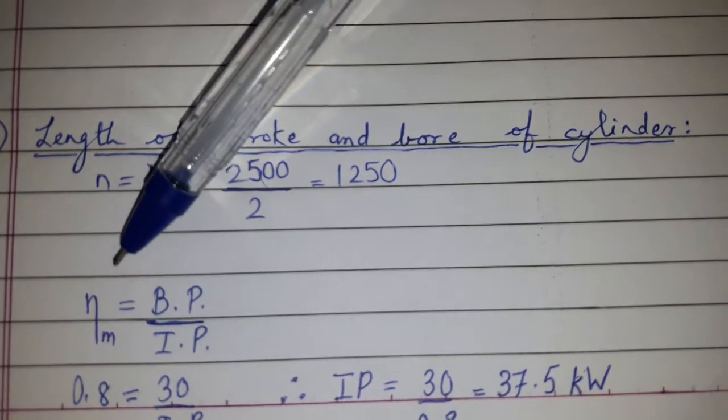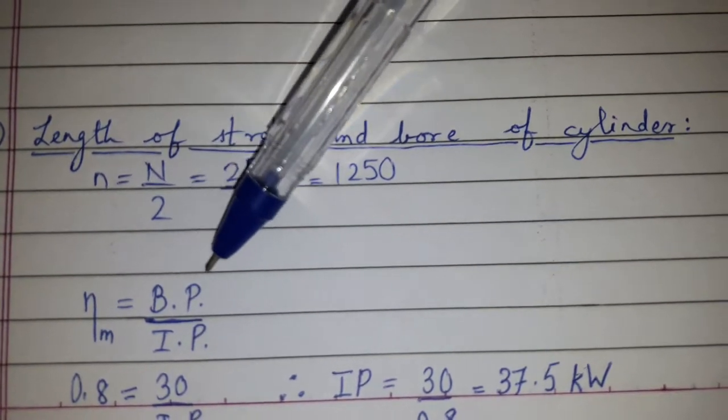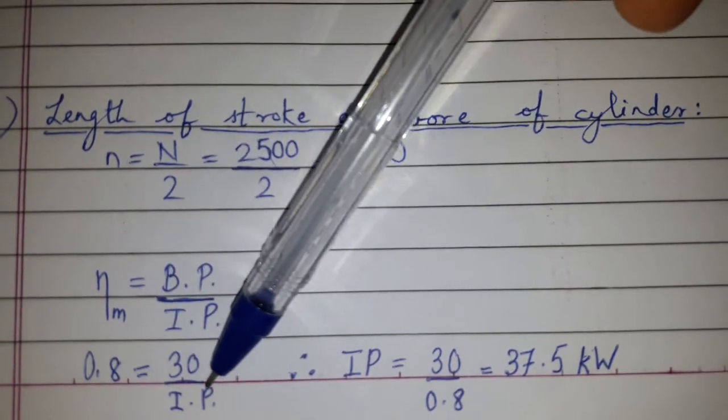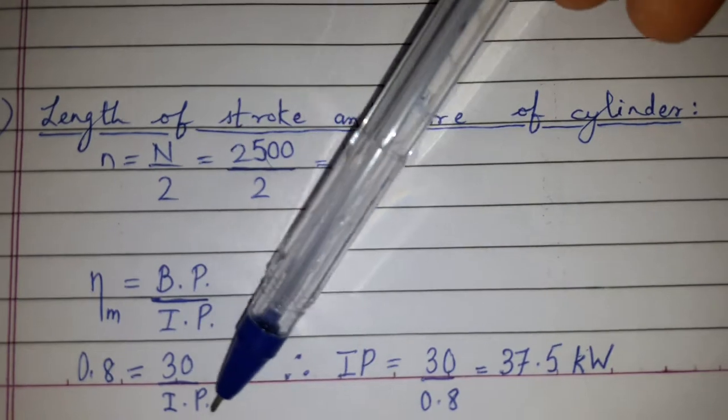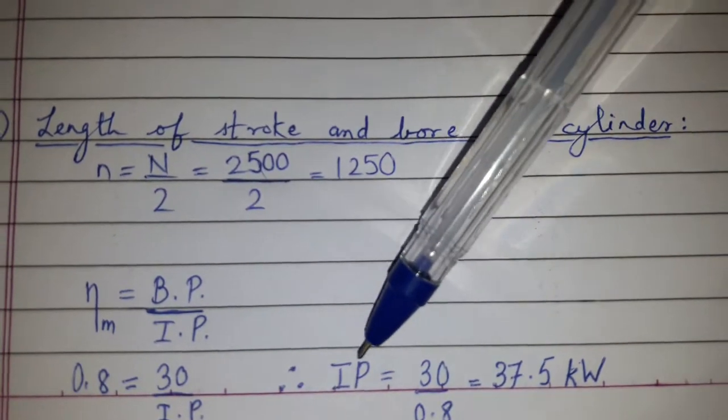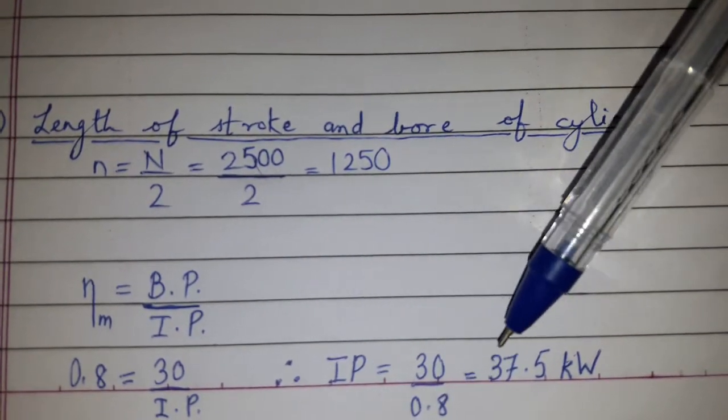Now mechanical efficiency is BP upon IP. With this we can calculate IP. So 0.8 equals 30 upon IP, and we got IP equals 30 upon 0.8, that is 37.5 kilowatts.